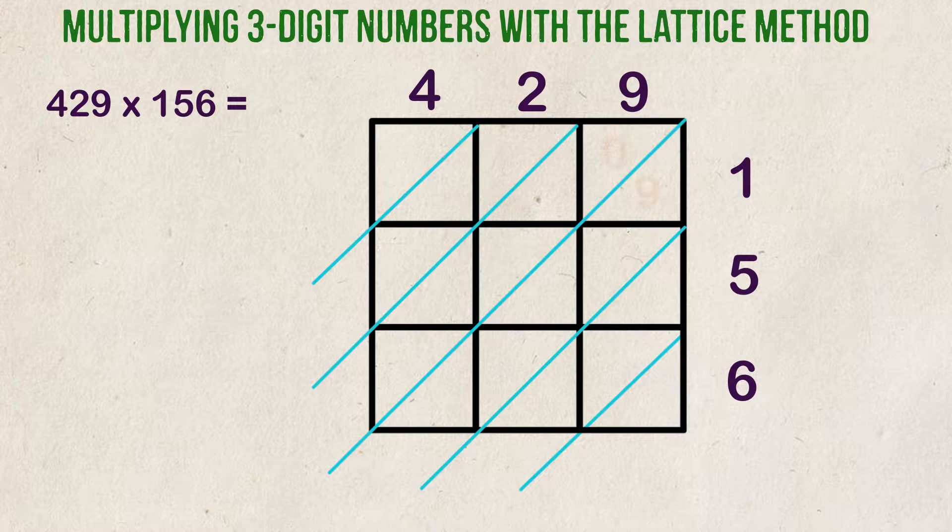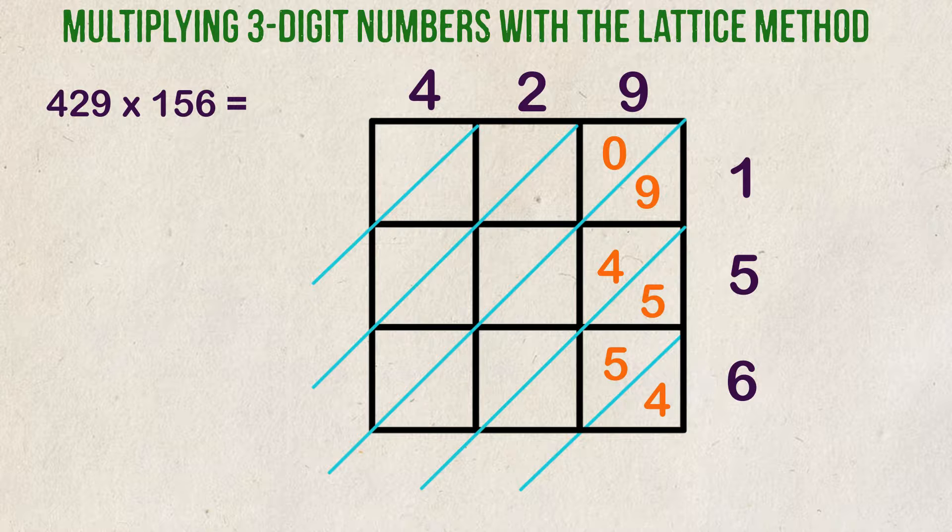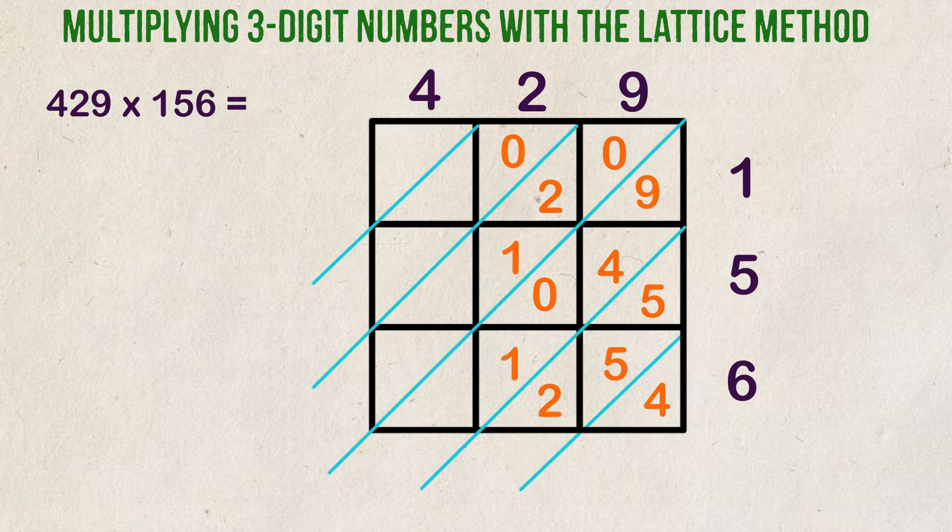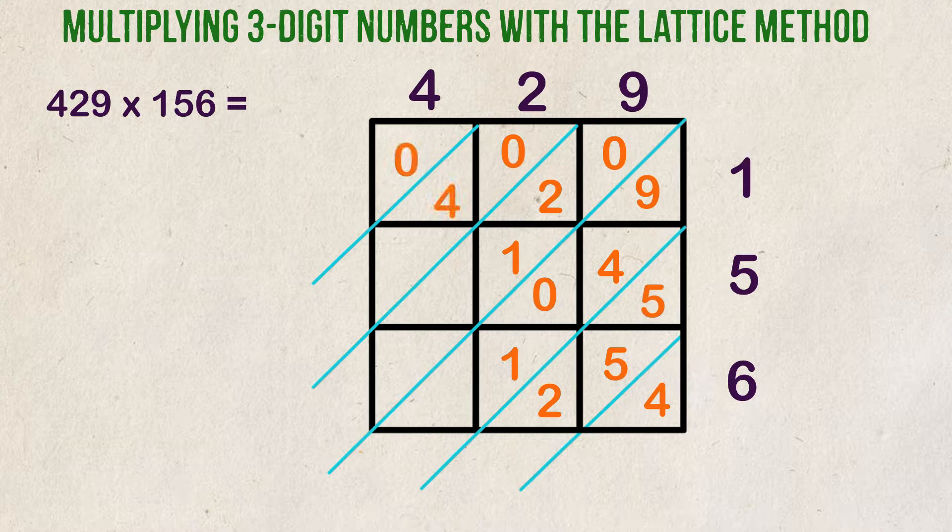Nine times one is nine. Nine times five is 45. Nine times six is 54. Next column. Two times one is two. Two times five is ten. Two times six is twelve. Last column. Four times one is four. Four times five is twenty. Four times six is twenty-four.